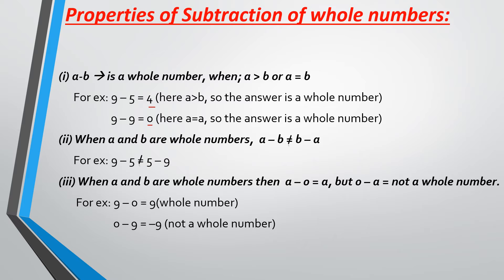According to the statement, when I subtract 0 from 9 — that is, 9 minus 0 — my answer is 9, which is a whole number. But 0 minus 9 is equal to minus 9, which is clearly not a whole number.